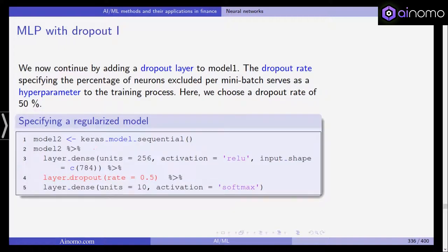Now we continue by adding a dropout layer to model one. The dropout rate, specifying the percentage of neurons excluded per mini-batch, serves as a hyperparameter. Here we choose a dropout rate of 50%. We estimate and fit model two with keras.model.sequential. We have layer.dense with 256 neurons, activation function ReLU, and then we also have the layer.dropout with rate 50%, and then the last layer with 10 outputs using softmax as the activation. So we have three layers now.